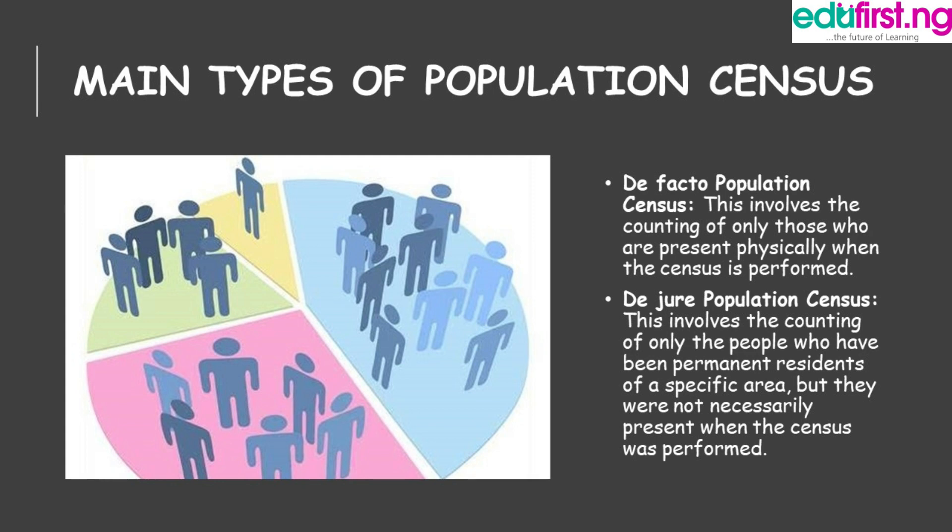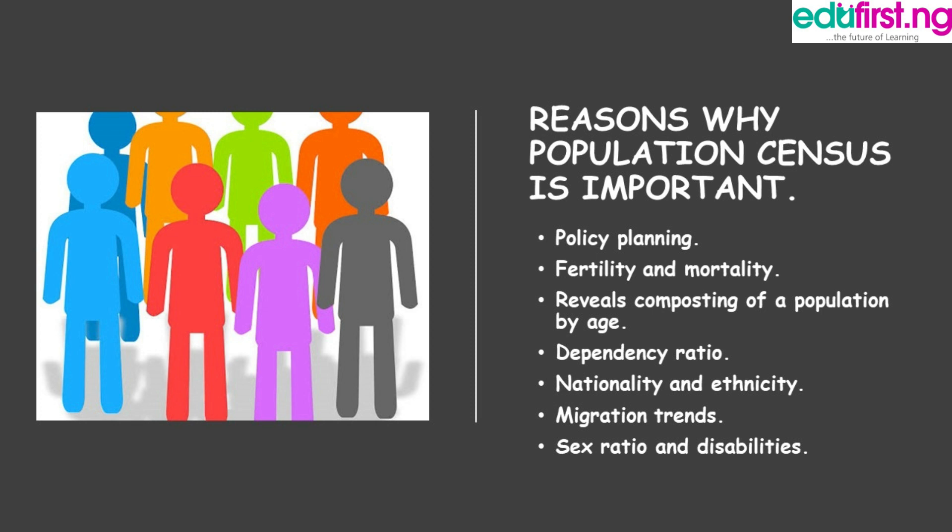So, we'll look at the reasons why population census is important. We have seven reasons: 1. Policy planning. 2. Fertility and mortality — it helps us know the birth rate, and on mortality, it helps us know the rate of death in the country. 3. It reveals the composition of the population by age. 4. Dependency ratio. 5. Nationality and ethnicity. 6. Migration trends. 7. Sex ratio and disabilities.